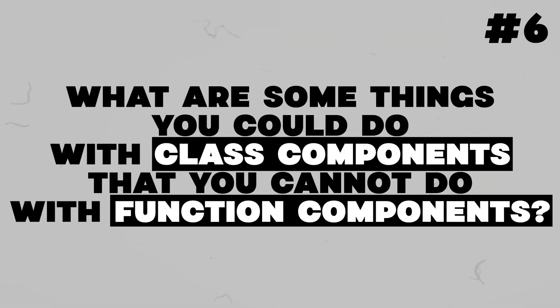One final question about class components versus functional components: what are some things you could do with class components that you cannot do with functional components? Probably the biggest difference is that in functional components you cannot directly access lifecycle methods — we do that through hooks, which offer a simpler API. One good example is error boundaries: with a class component you can use a specific lifecycle method to catch errors and provide an error boundary rather than your whole UI breaking apart. You can't necessarily do that with functional components. So whenever you need an implementation that hooks into specific lifecycle methods, you should probably consider class components.